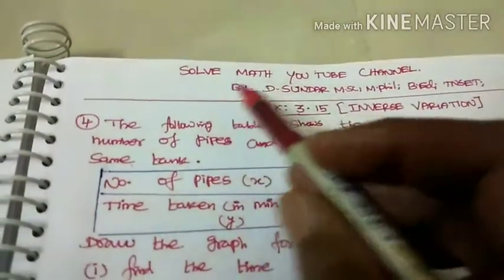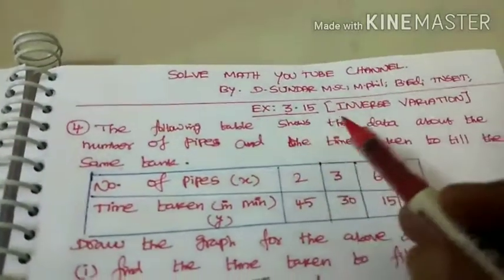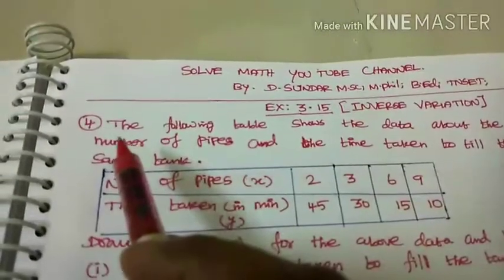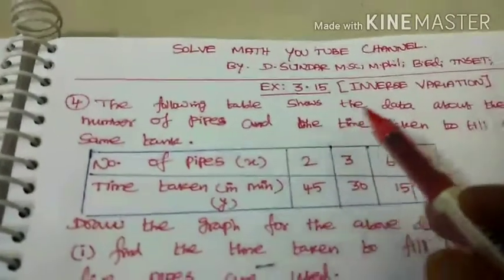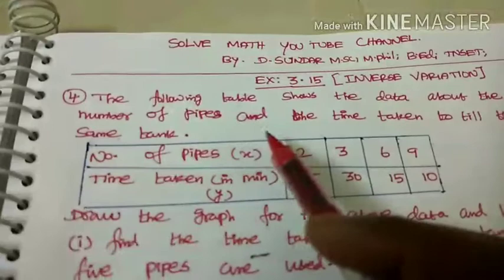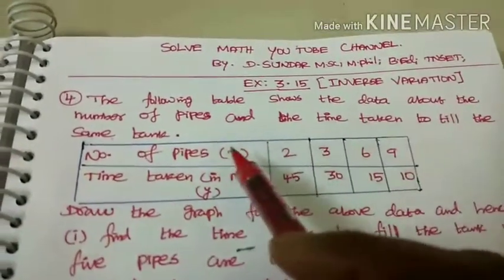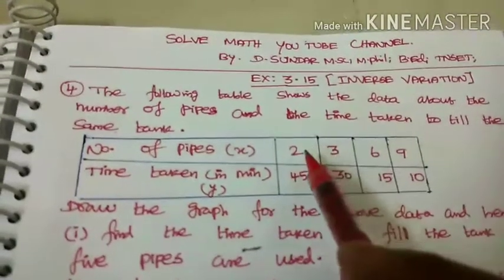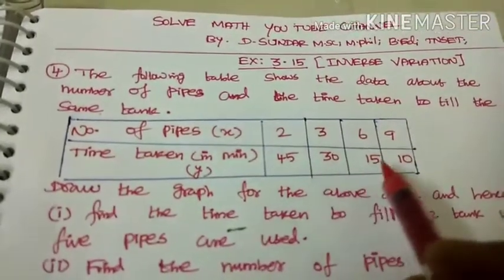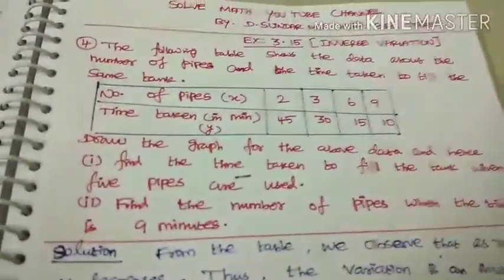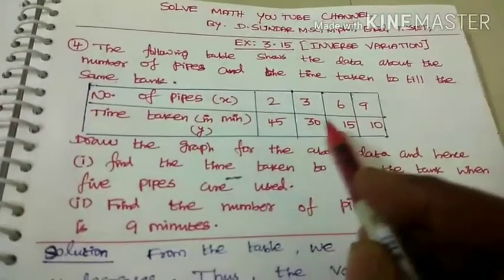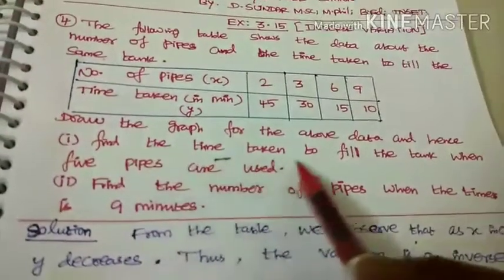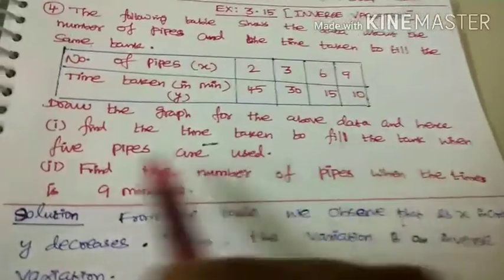Welcome to Solve Math YouTube channel. This is an algebra inverse variation exercise, question number four. The following table shows data about the number of pipes and the time taken to fill the same tank. Number of pipes x: 2, 3, 6, 9. Time taken in minutes y: 45, 30, 15, 10. Fill the graph and hence find the time taken to fill the tank when five pipes are used.